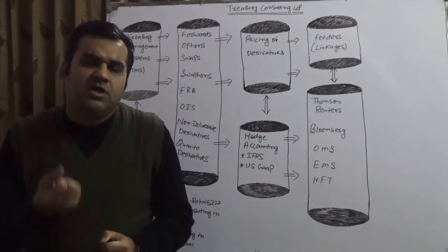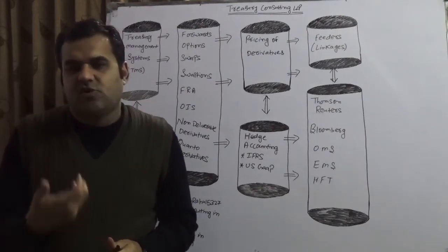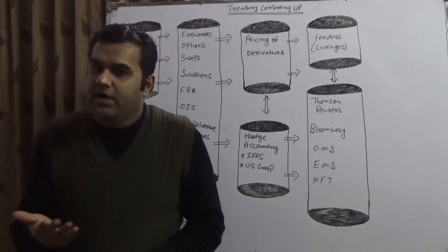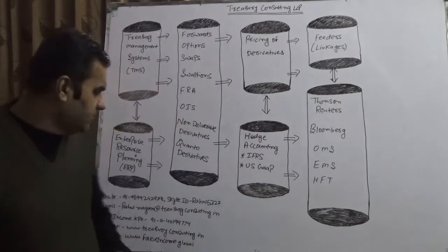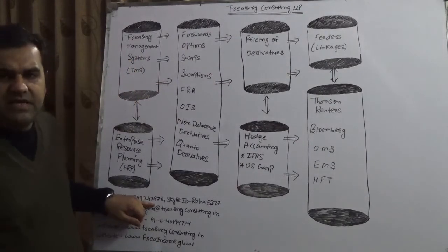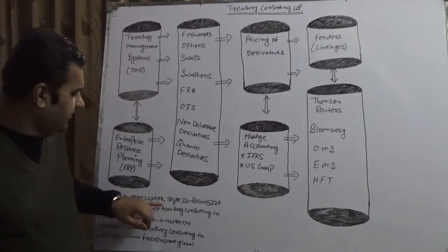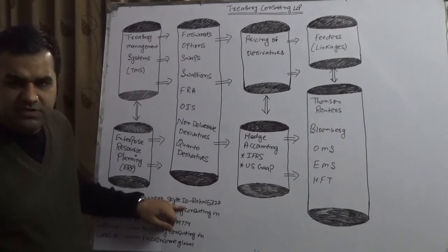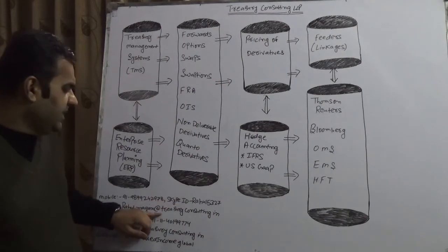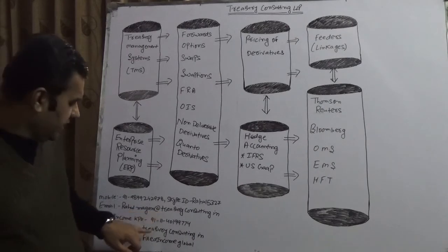Hopefully soon our fixed income platform would act as a PaaS, platform as a service, which is currently SaaS, software as a service. In case you want to check anything, you're most welcome. My mobile is 9899242978. My Skype ID is rahul5327. My email is rahul.magan@treasuryconsulting.in.